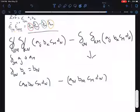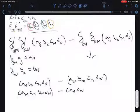And then now we want to match the variables with the same indices. So we have A sub M with C sub M, B sub N with D sub N, minus A sub N with D sub N, B sub M with C sub M.